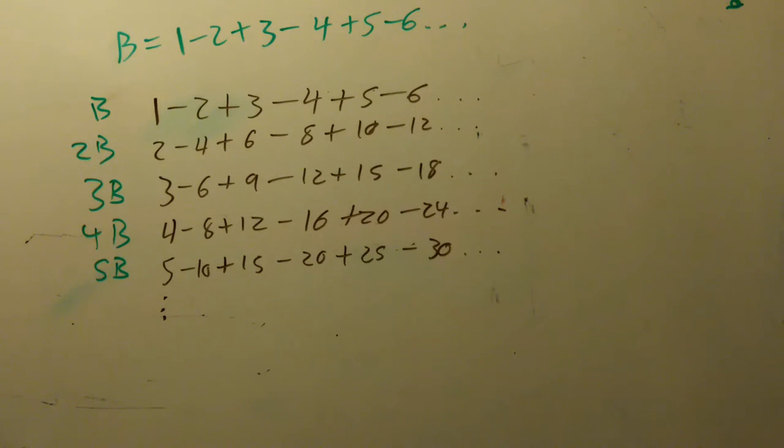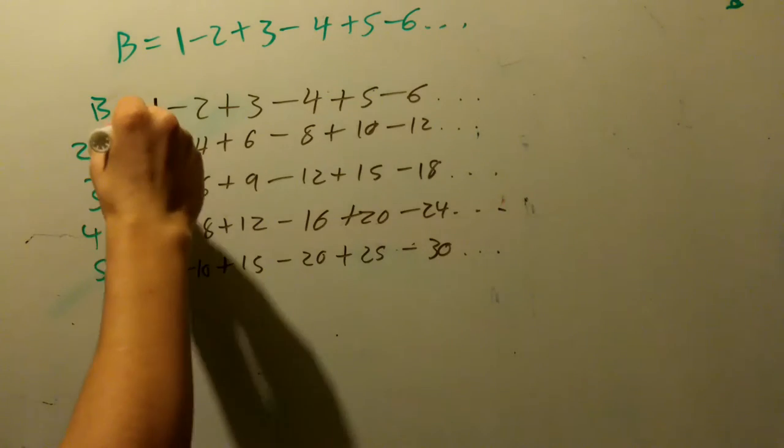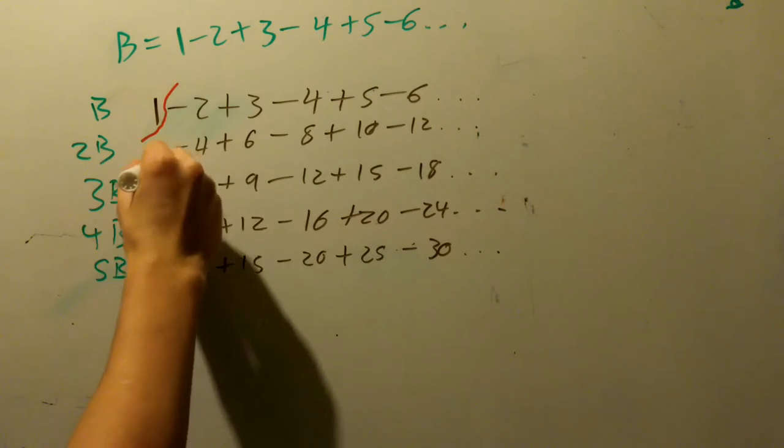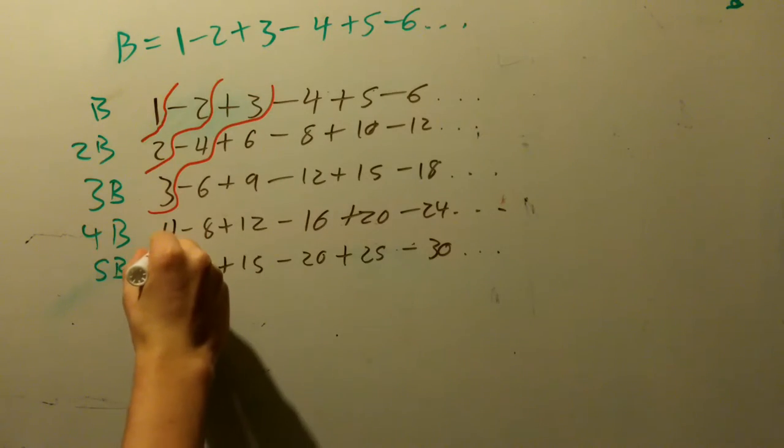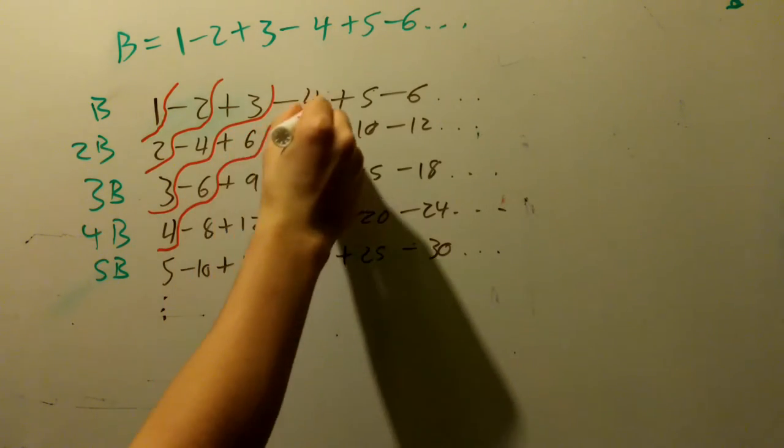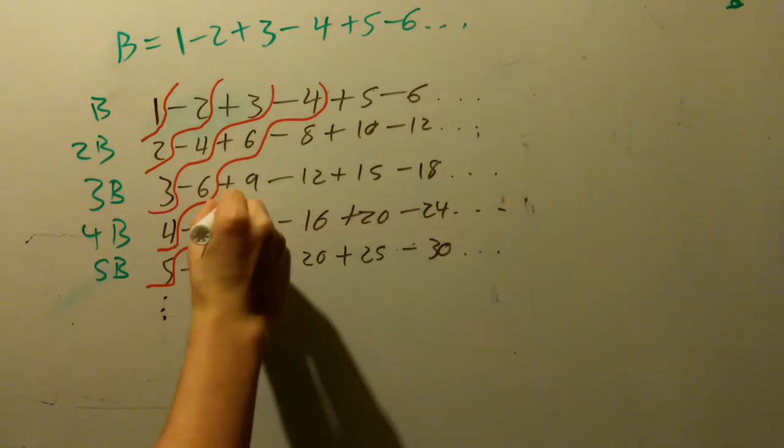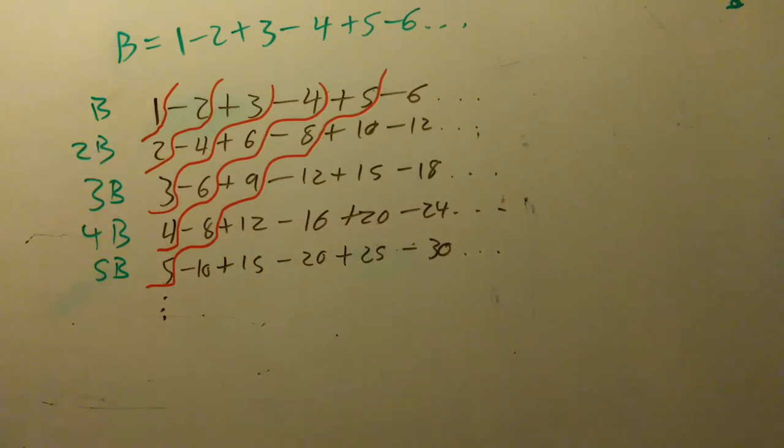I noticed a pattern when I drew this out, and that's with the diagonals. We have 1, we have 2 minus 2, we have 3 minus 4 plus 3, we have 4 minus 6 plus 6 minus 4, minus 8 plus 9 minus 8 plus 5. If we chart these out, we have 1.